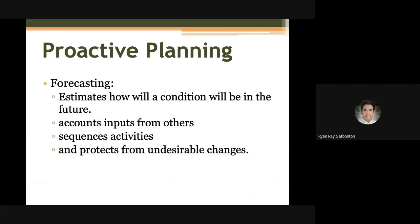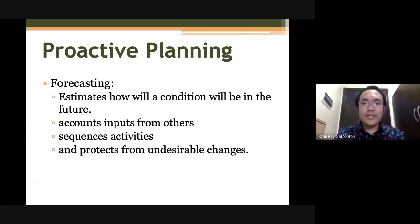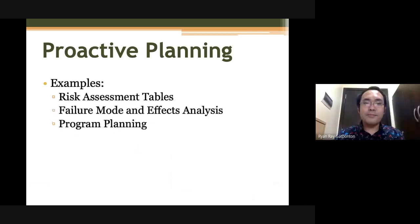Another type under proactive planning is forecasting. This is an estimation of how a condition will be in the future. In forecasting, you try to input insights from different people, sequence your activities, and protect your plan from undesirable changes. Tools that you use for proactive planning can be in the form of a risk assessment table, failure mode and effect analysis, and program planning.